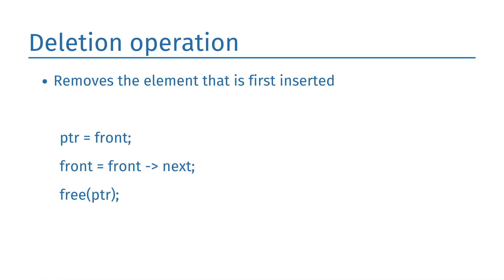The deletion operation removes the element that was first inserted. First, check whether the list is empty. If front == null, the list is empty — write 'underflow' to the console and exit. Otherwise, delete the element pointed to by the front pointer. To do this, copy the node pointed to by front into a temporary pointer, shift the front pointer to its next node, and free the node pointed to by the temporary pointer.